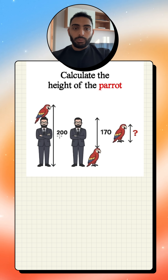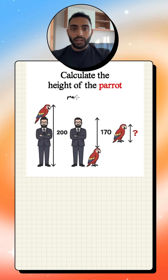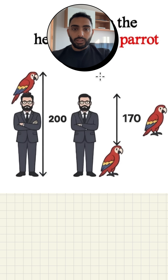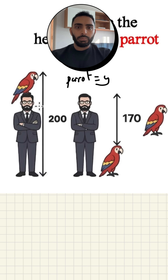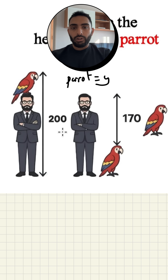First thing I'm going to do is represent the human, the man, as X, and I'm going to represent the parrot as Y. I don't know many names of birds — we'll just call it the parrot. Oh yeah, it is a parrot.